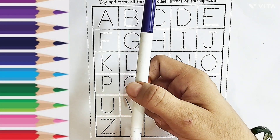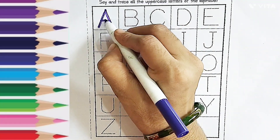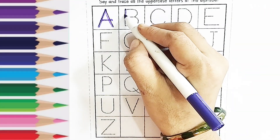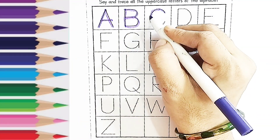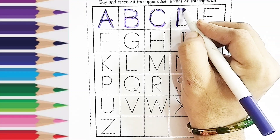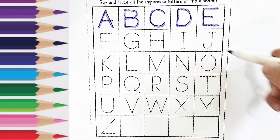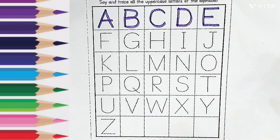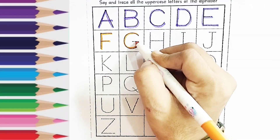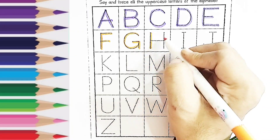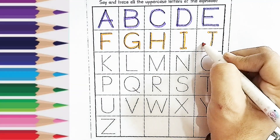Purple color. A, B, C, D, E. Orange color. Green color. F, G, H, I, J.